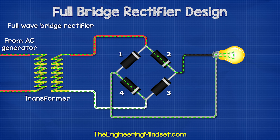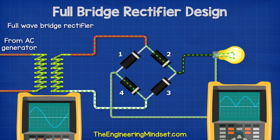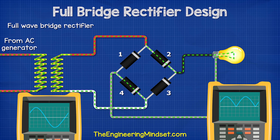In the positive half of the sine wave, the current flows through diode two, through the load, through diode four and then back to the transformer. In the negative half, the current flows through diode three, through the load, through diode one and then back to the transformer. So the transformer is supplying an AC sine wave, but the load is experiencing a rippled DC waveform because the current flows in just one direction.